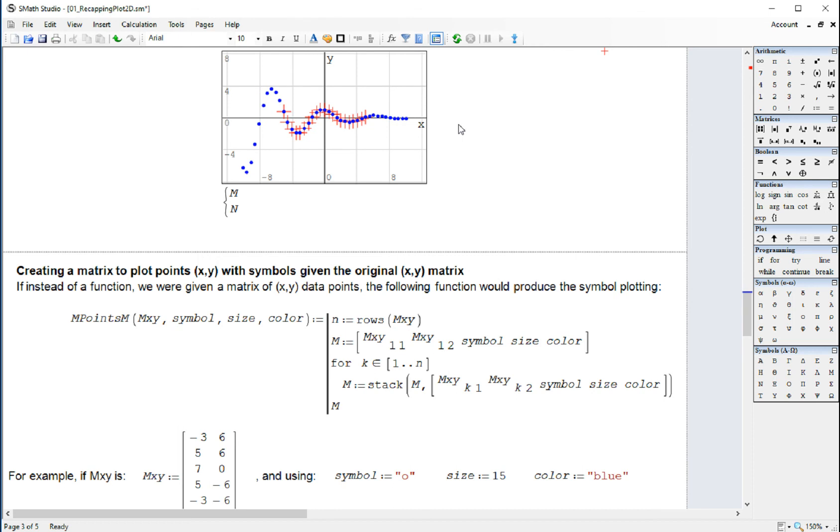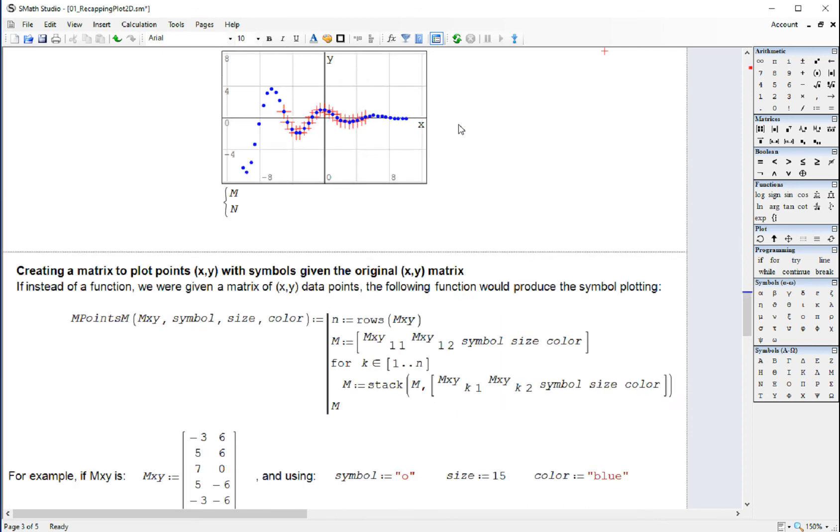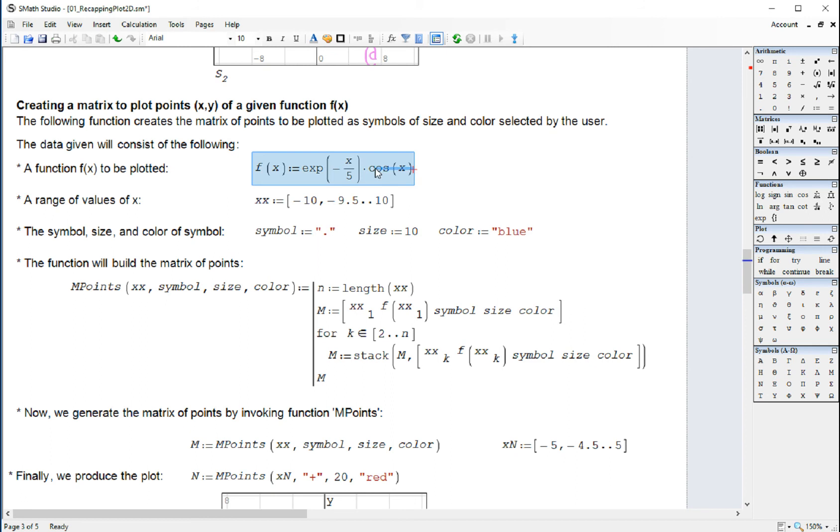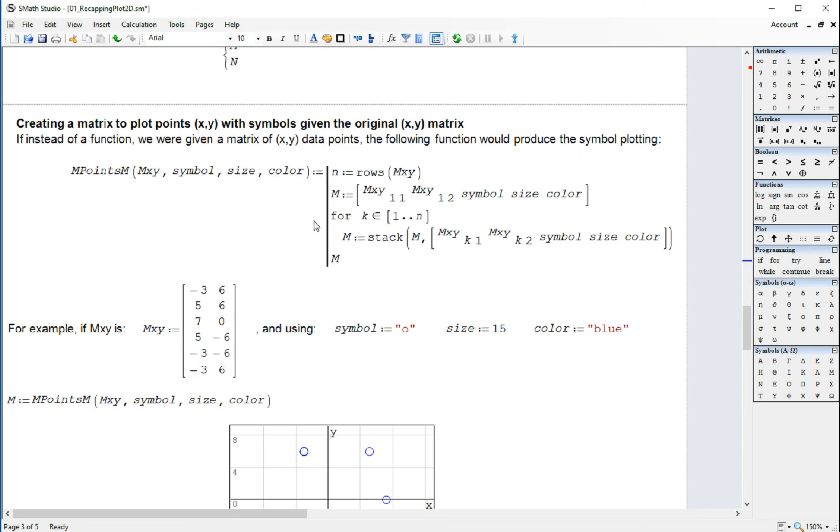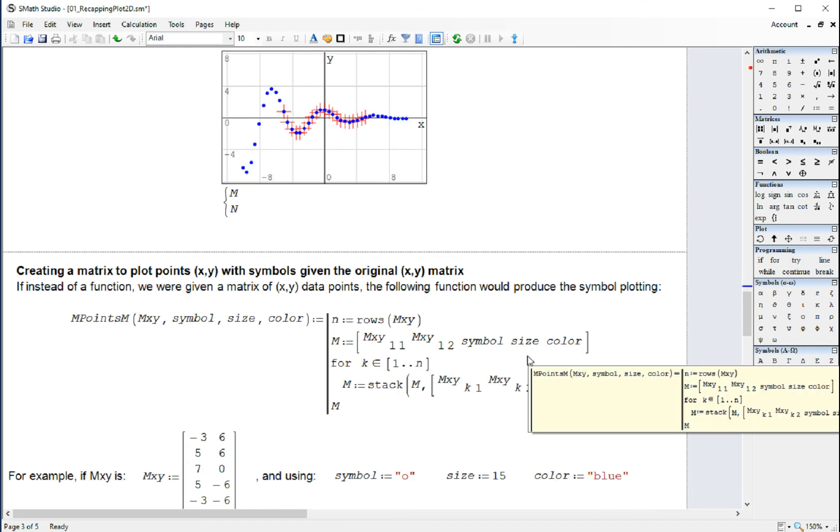The next one is creating a matrix to plot points with symbols given in the original XY matrix. So now instead of giving a function as we did in here, we're going to give a matrix. And we're going to use also the specifications for symbols, size, and color.